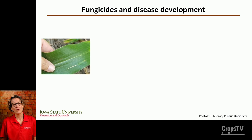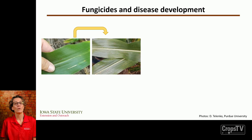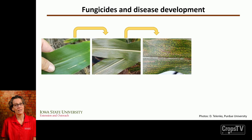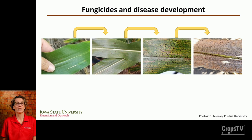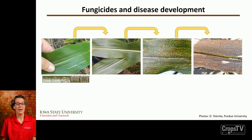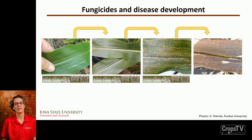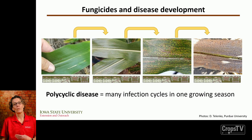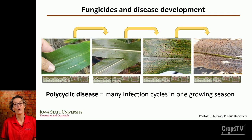Now let's talk about fungicides and disease development. With tar spot, if you came back to a plant a week or two later you'd expect to see more disease, and another week later even more, and eventually the leaf would die covered in tar spot. Tar spot, gray leaf spot, and northern corn leaf blight are polycyclic diseases — there are many infection cycles in one growing season.